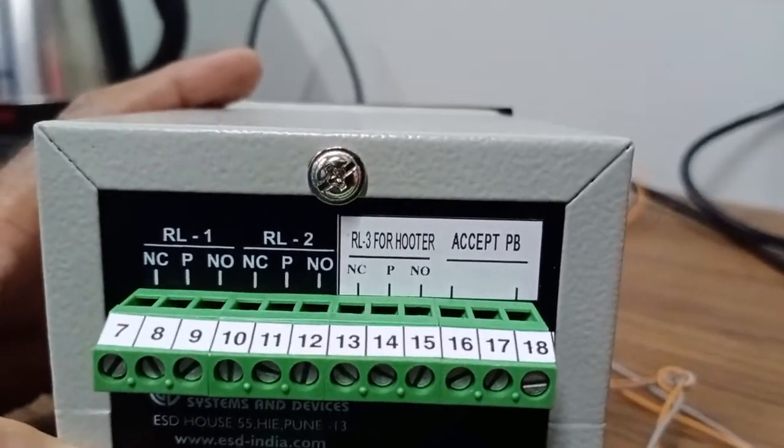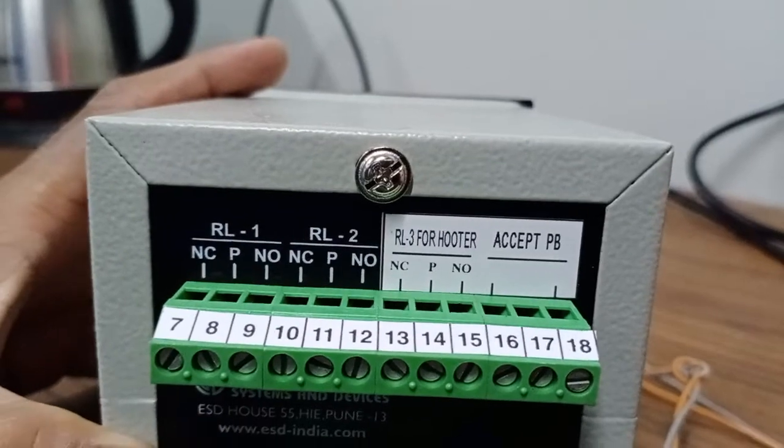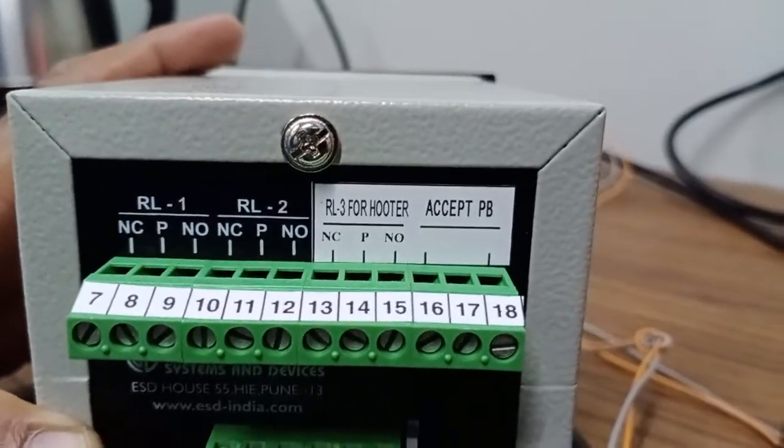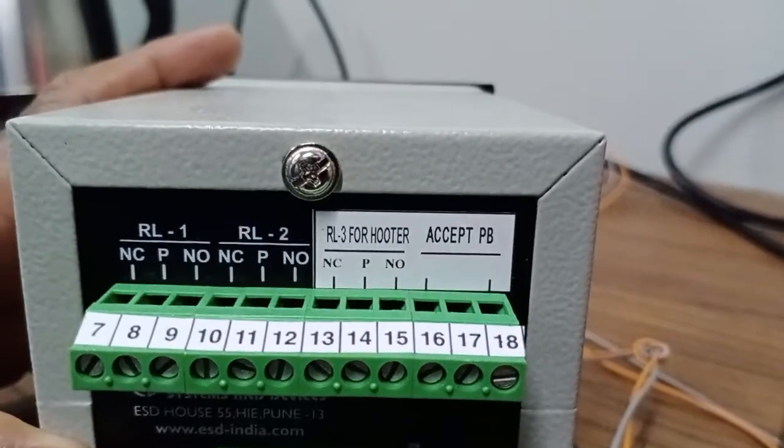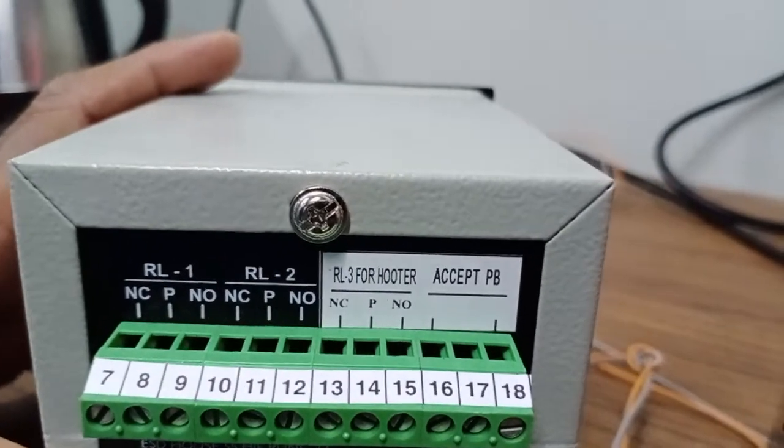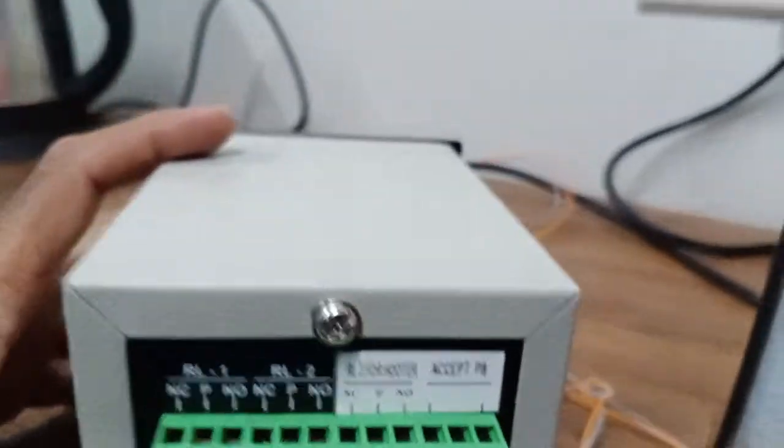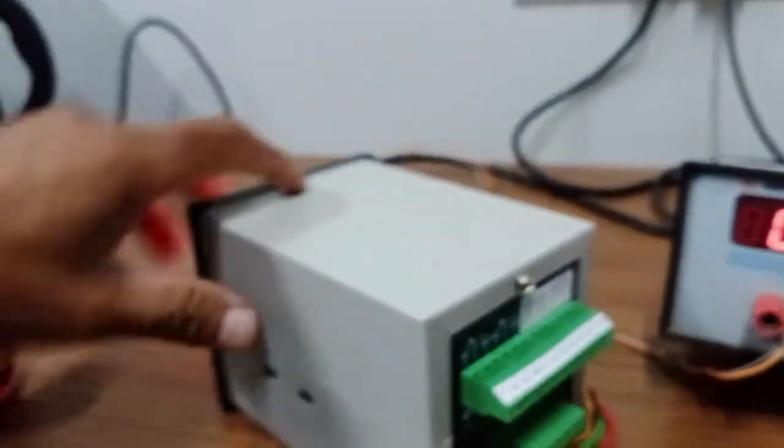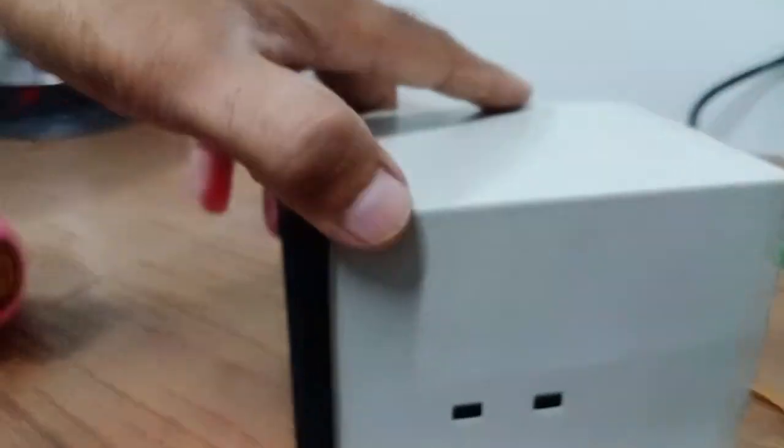And after the time is complete this will get activated. There is an accept push button. Once that time completes the hooter is on. And then we can accept it to acknowledge it. The depth of the instrument is 120 mm.